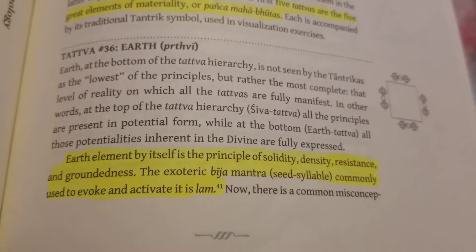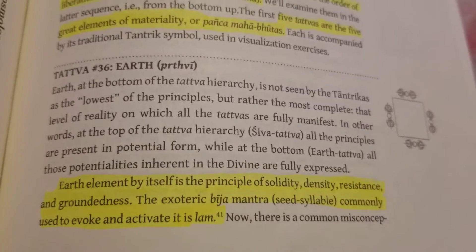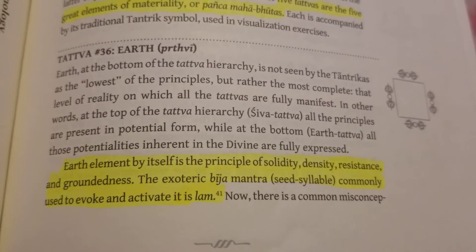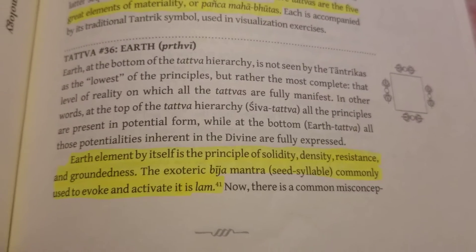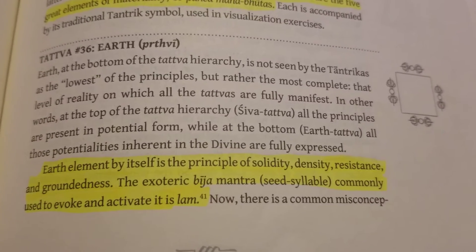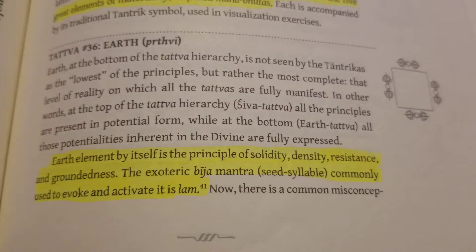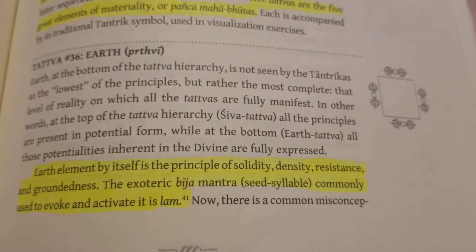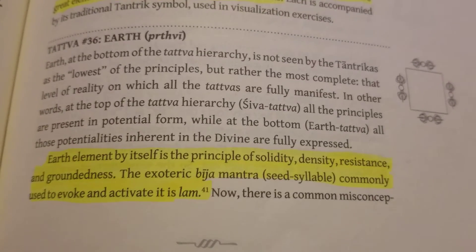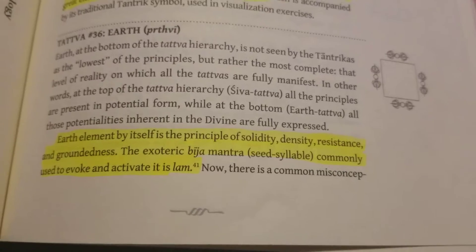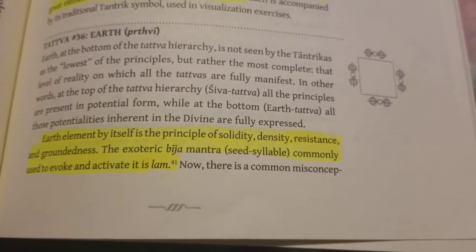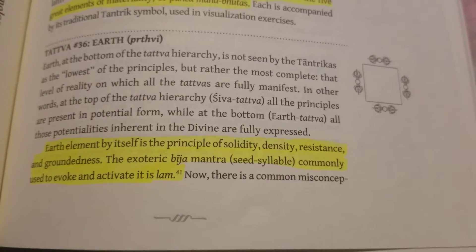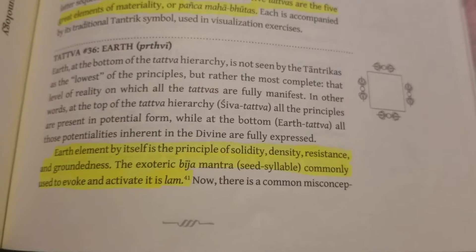The lowest element, of course, is earth. It's at the bottom of the Tatwa hierarchy and is not seen by tantricas as the lowest of principles, but rather the most complete — that level of reality on which all the Tatwas are fully manifest. In other words, at the top of the Tatwa hierarchy, Shiva, all the principles are present in potential form, while at the bottom, earth, all these potentialities inherent in the divine are fully expressed. Earth element by itself is a principle of solidity, density, resistance, and groundedness. The esoteric Beej Mantra, seed syllable commonly used to evoke and activate it, is LAM.